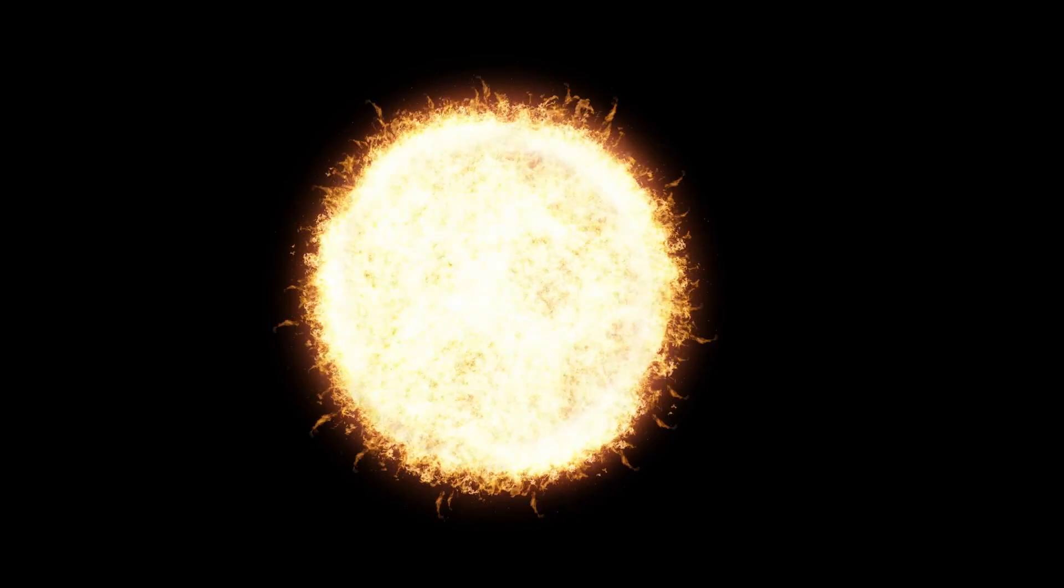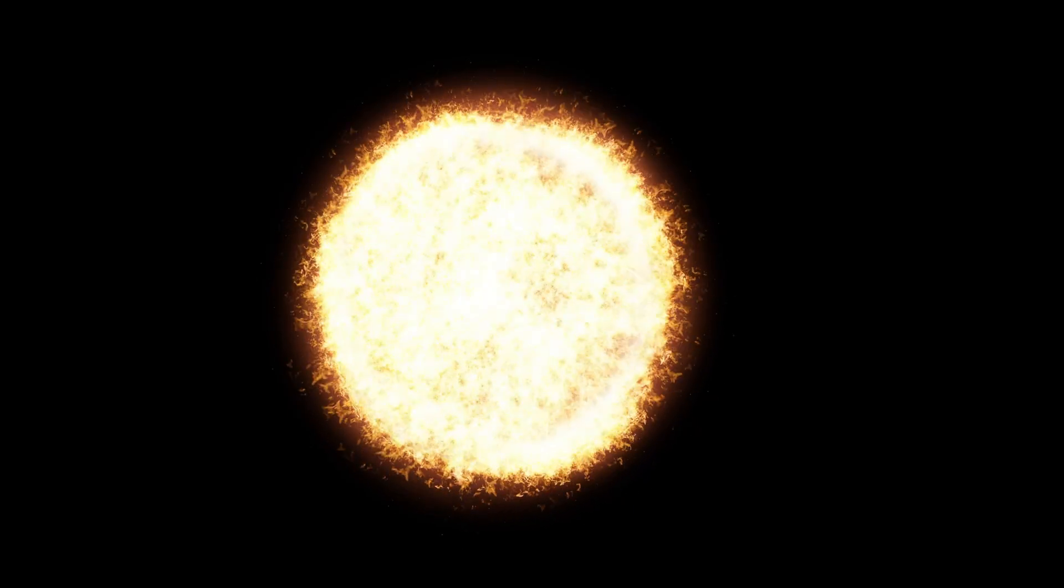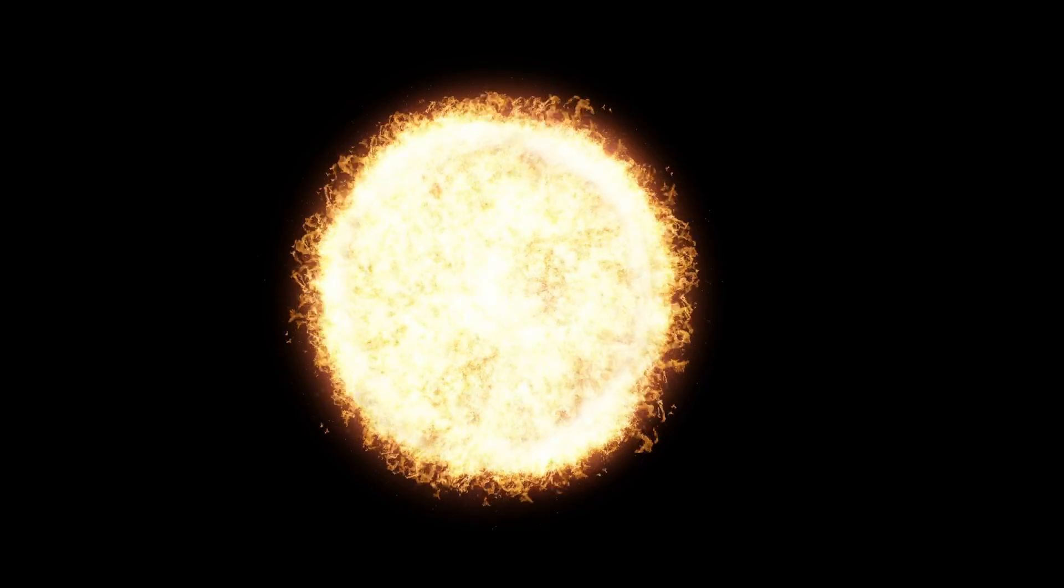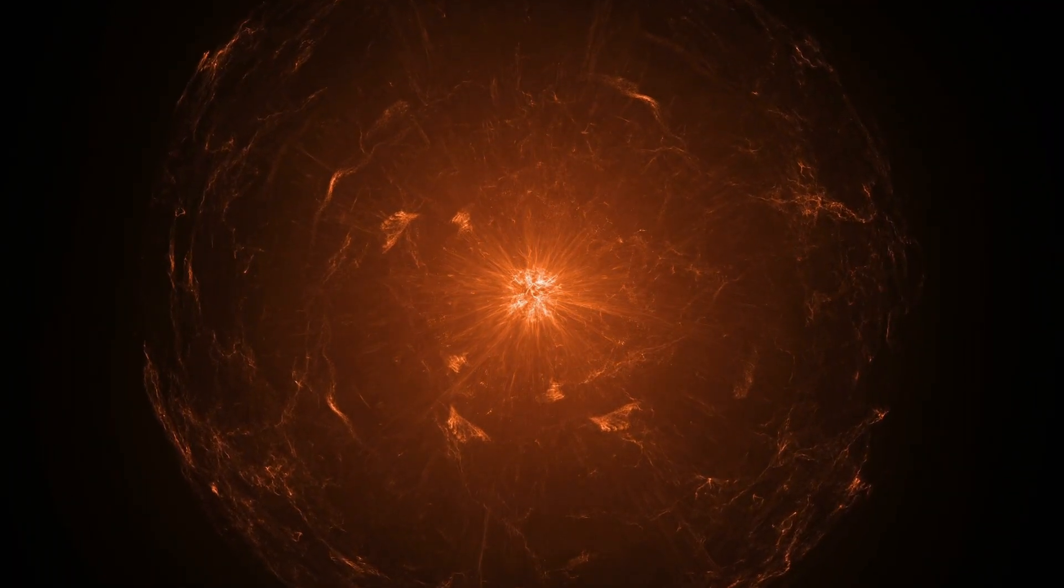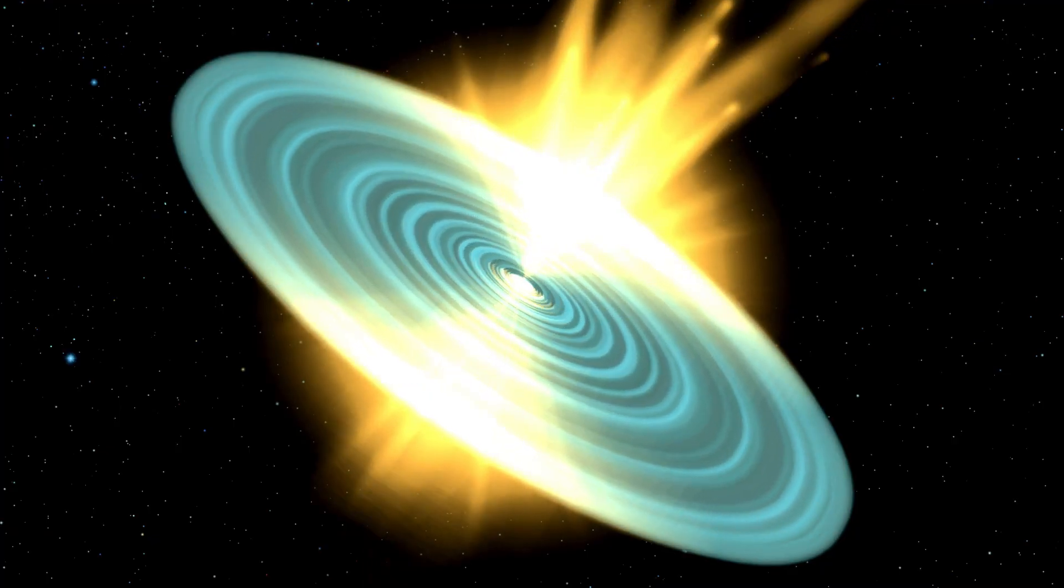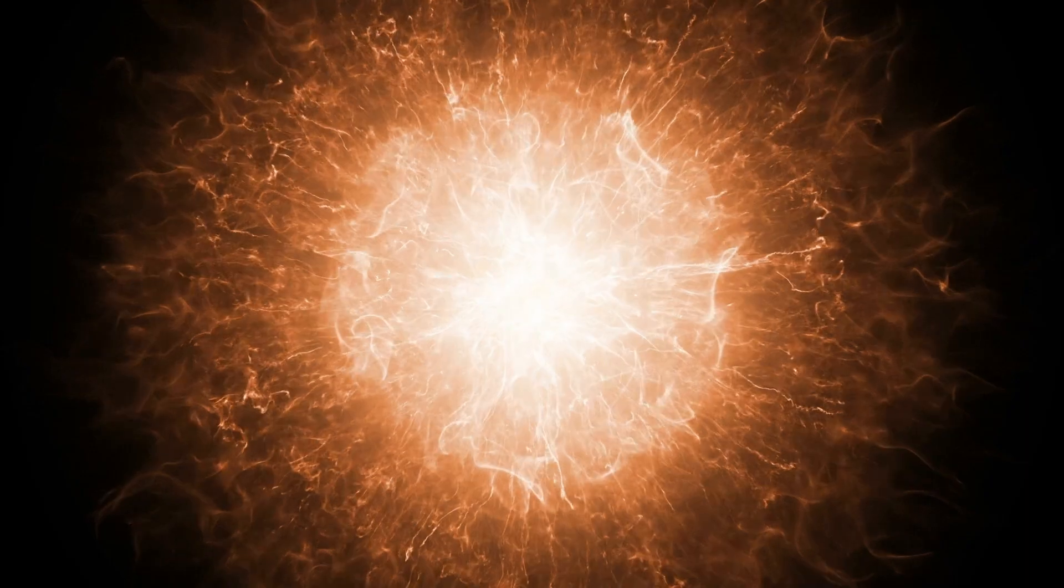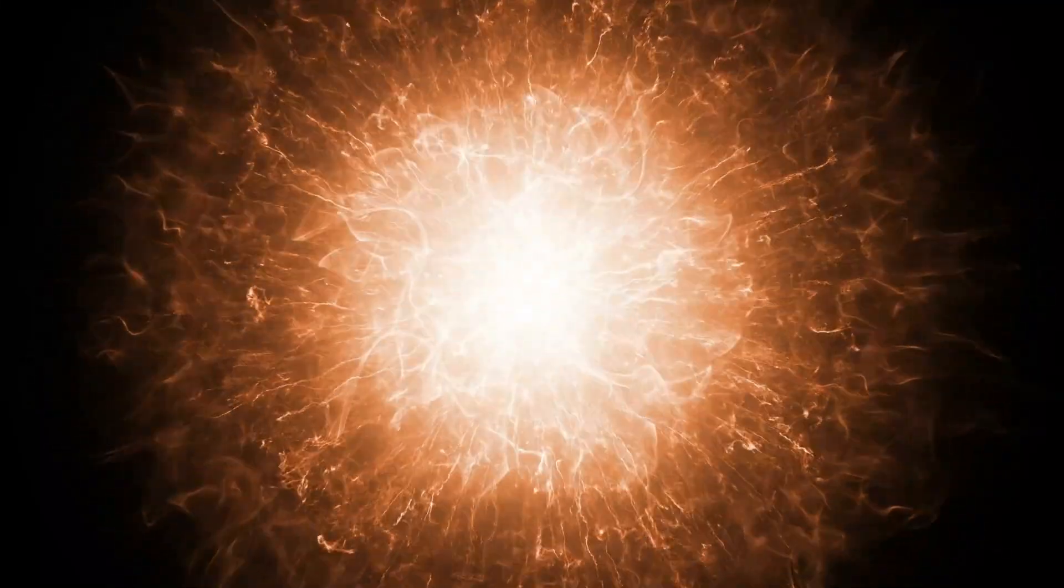When Betelgeuse goes supernova, the entire solar system will notice. The explosion won't harm Earth directly, it's too far, but the radiation burst could disrupt satellites, ionize the upper atmosphere and possibly interfere with global communications. But the psychological effect will be far more profound. For days, the night sky will be banished. A new light, burning white with the brightness of a full moon, will rise where Betelgeuse once shimmered in red.